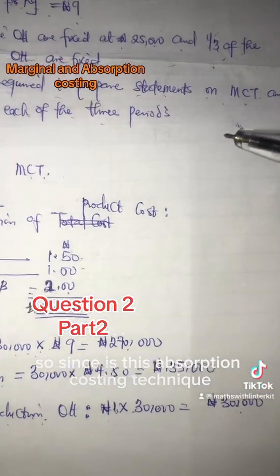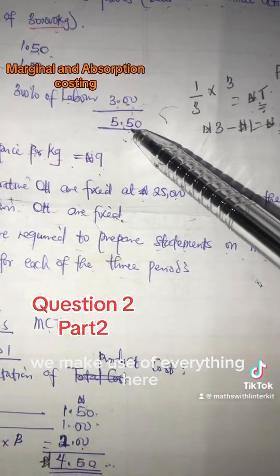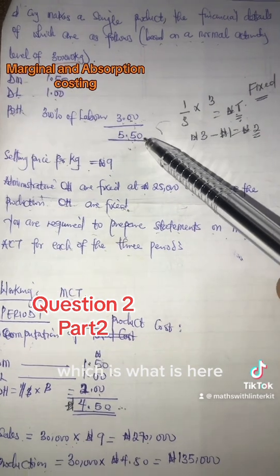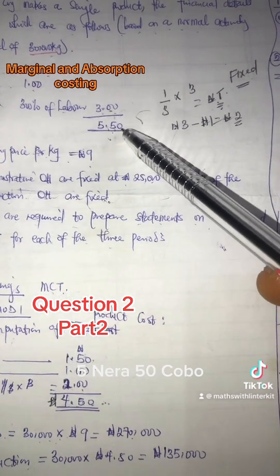So since it is absorption costing technique, we make use of everything here, which is what is here. Five naira fifty kobo.